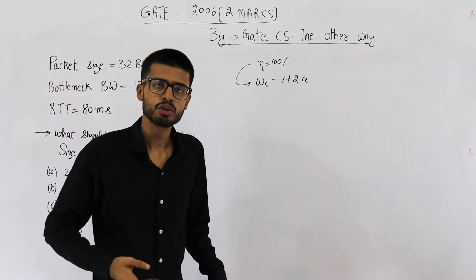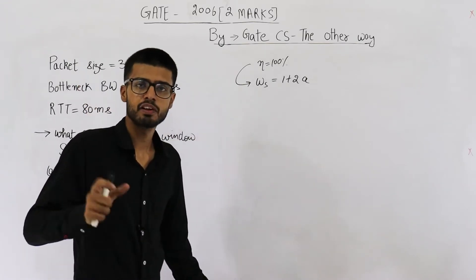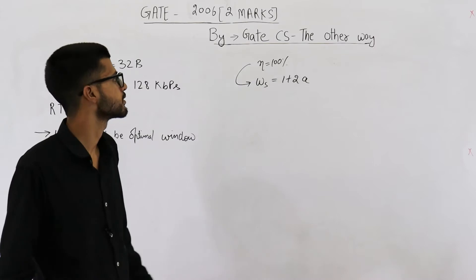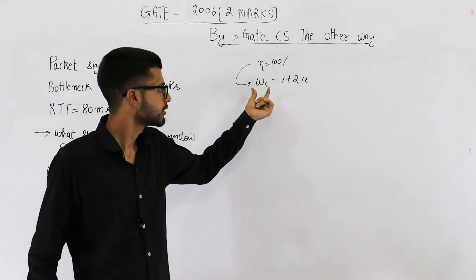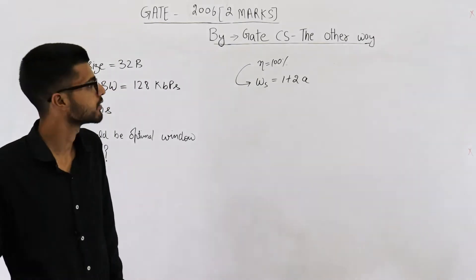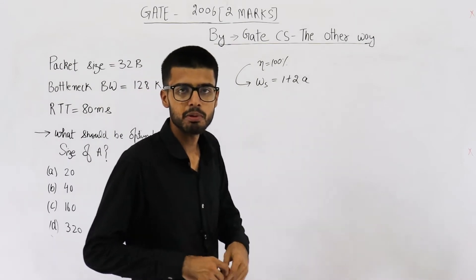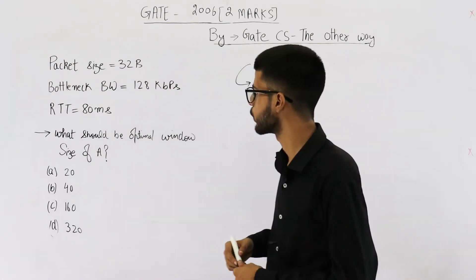So optimal window size means we want 100% efficiency. And the window size for 100% efficiency is 1 plus 2A. The sender's window must be of this size if we want 100% efficiency. This value is what we need to determine. But before that let me discuss two points.